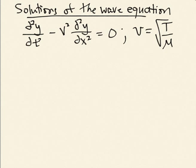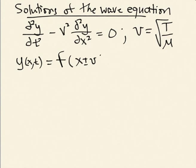Now we want to talk about solutions to this equation. It turns out there are infinitely many solutions. Basically, there's one requirement for a function to be a solution: it has to be a function of a particular argument. So if I consider y as a function of x and t — the displacement of the string away from horizontal as a function of position and time — if this y function depends only on one argument, where x and t always appear together as x plus or minus vt, this will be a solution to the equation.